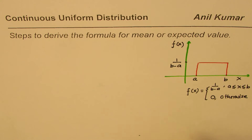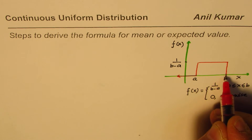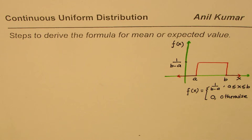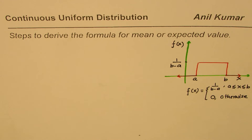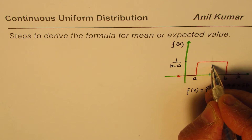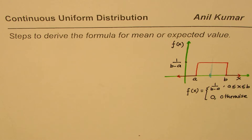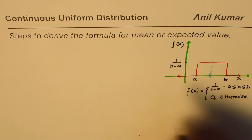So it is 0 otherwise — that is how continuous uniform distribution is always defined. Now we need to find the formula for mean or expected value. Some of you may be aware of integration — we are going to use integration to derive the formula for mean. You can visualize the center value here; the mean is that center value.